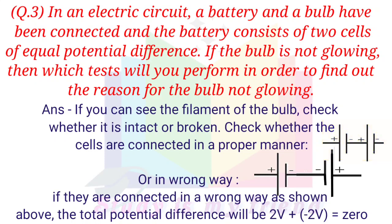Check whether the cells are connected in a proper manner or a wrong manner. If they are connected in a wrong way as shown above, the total potential difference will be 2V + (−2V) = 0.